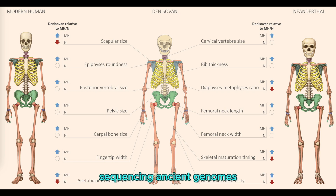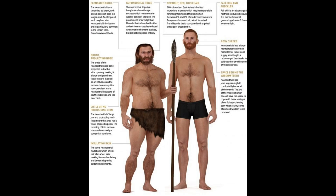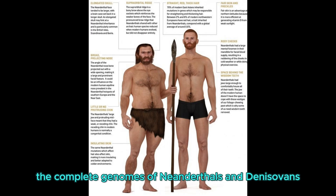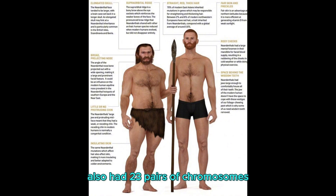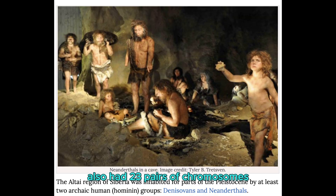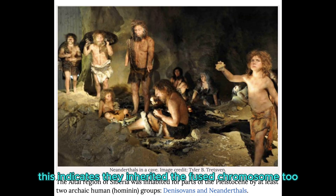Sequencing ancient genomes: The complete genomes of Neanderthals and Denisovans, sequenced from ancient remains, confirm that these archaic humans also had 23 pairs of chromosomes, just like modern humans. This indicates they inherited the fused chromosome 2.